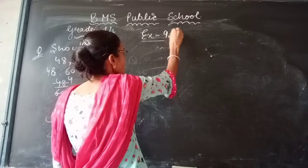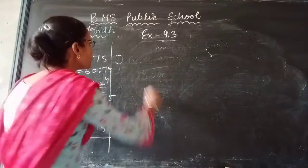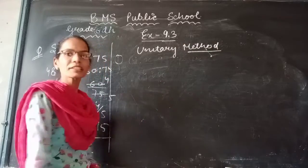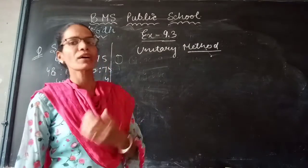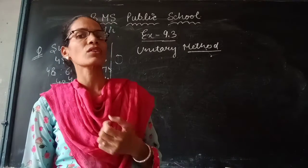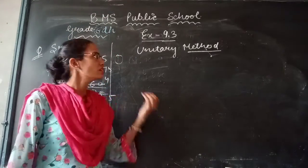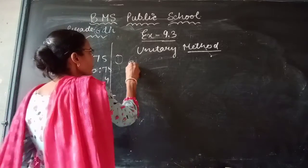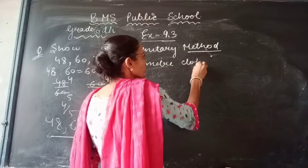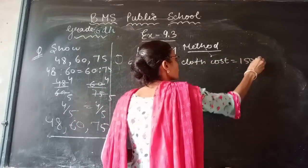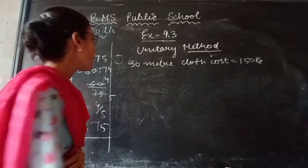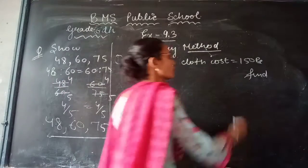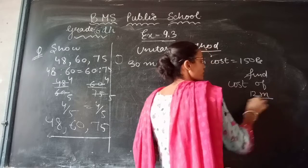Now we move to Exercise 9.3, which is on the unitary method. In the unitary method, questions are like: if the cost of 12 kg of rice is ₹150, find the cost of 20 kg. Suppose the cost of 30 meters of cloth is ₹150. Find the cost of 12 meters of cloth.